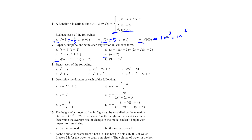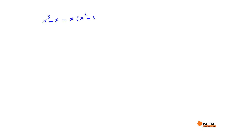Question 8: Factor each of the following. Let's do parts A, C, and E. Part A: x³ minus x. Factor out x to get x times (x² minus 1). Since x² minus 1 is a difference of squares, it factors as (x minus 1)(x plus 1). Therefore x³ minus x equals x times (x minus 1) times (x plus 1).